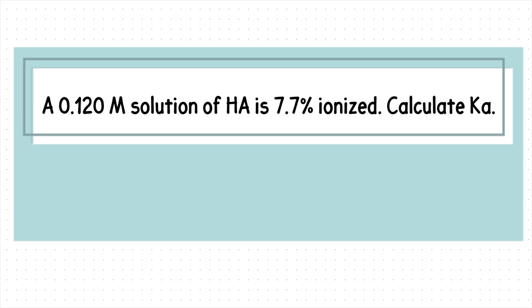A 0.120 molar solution of HA is 7.7% ionized. Calculate KA.